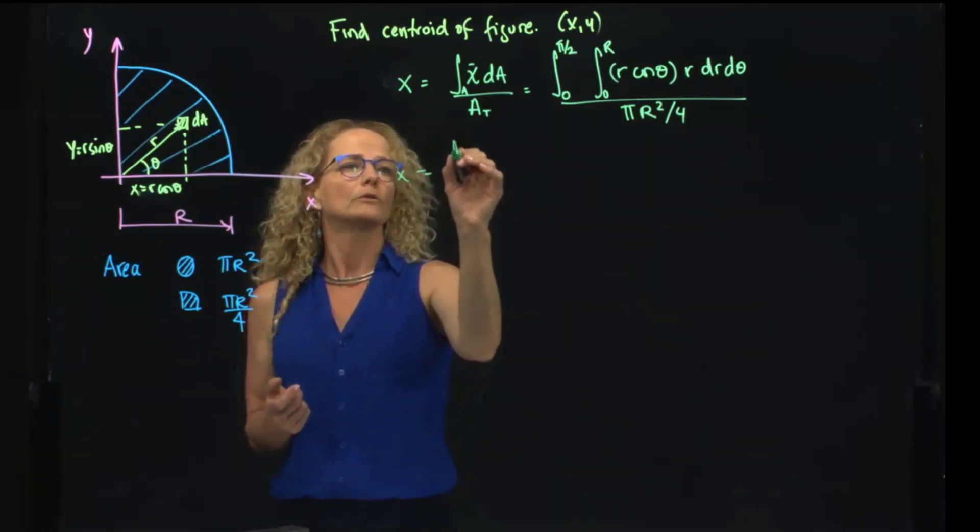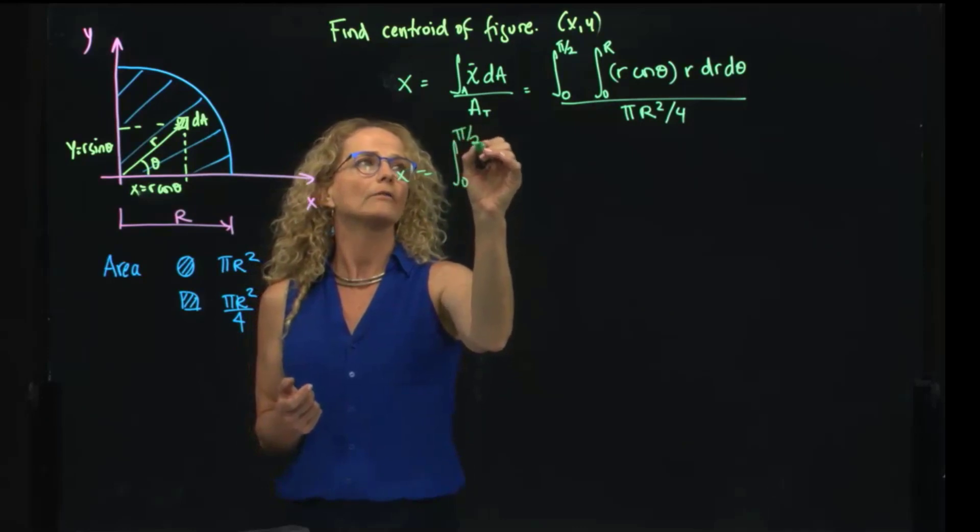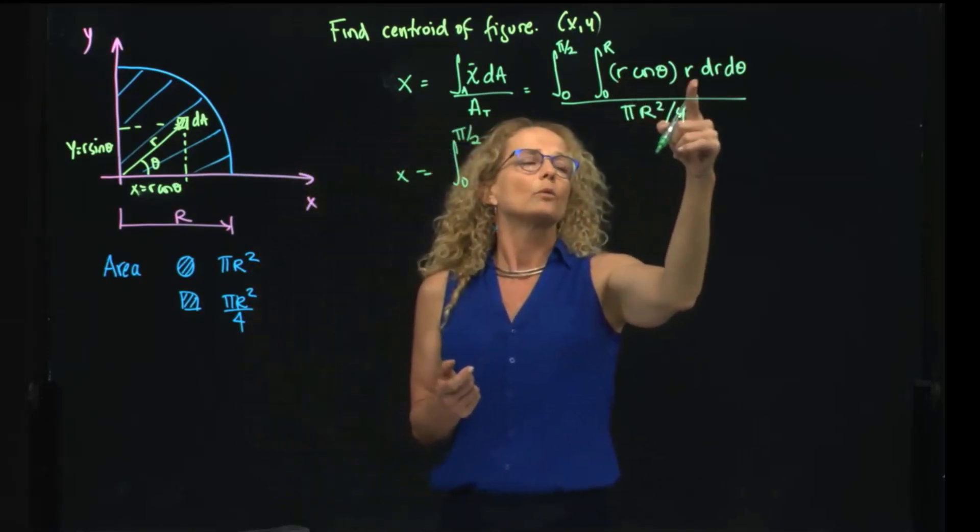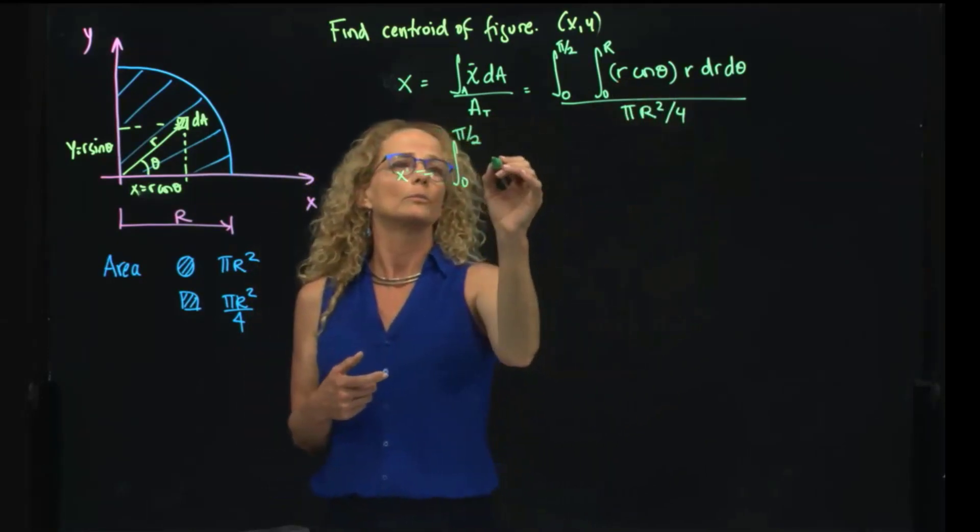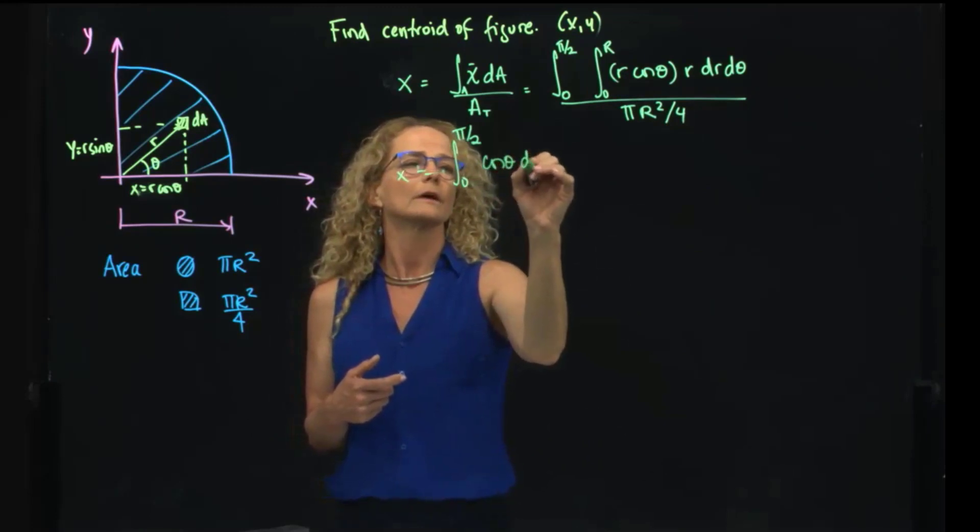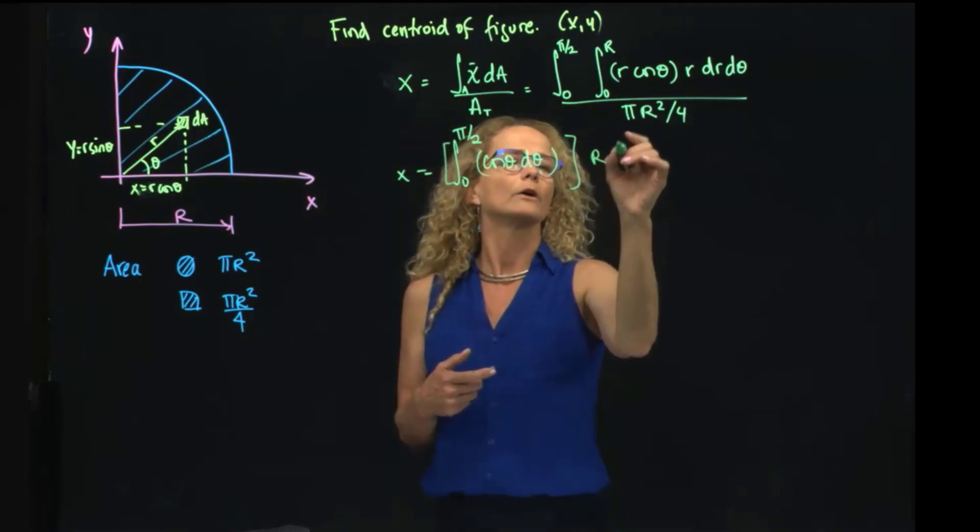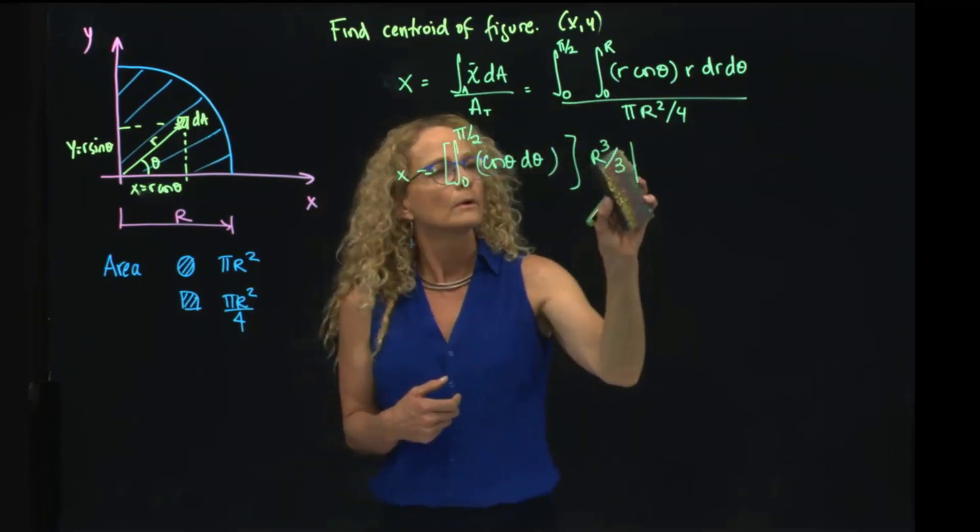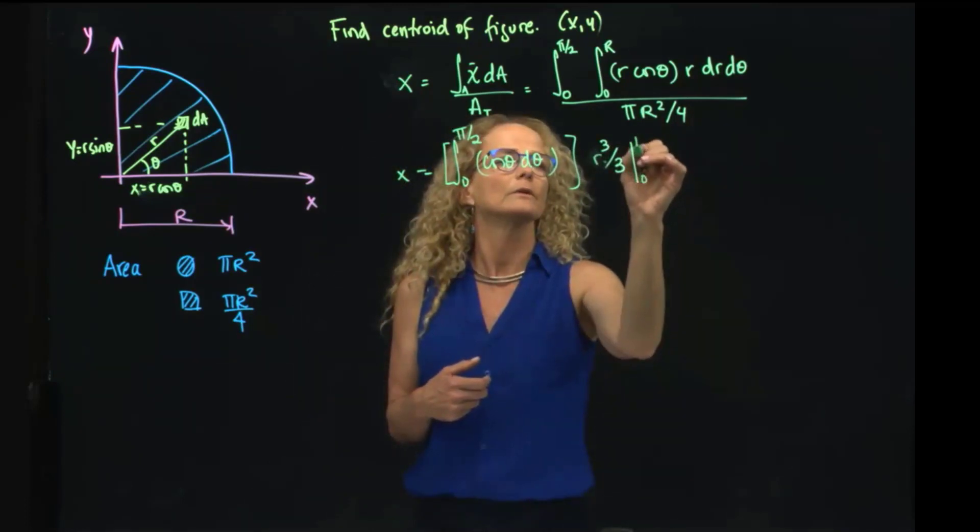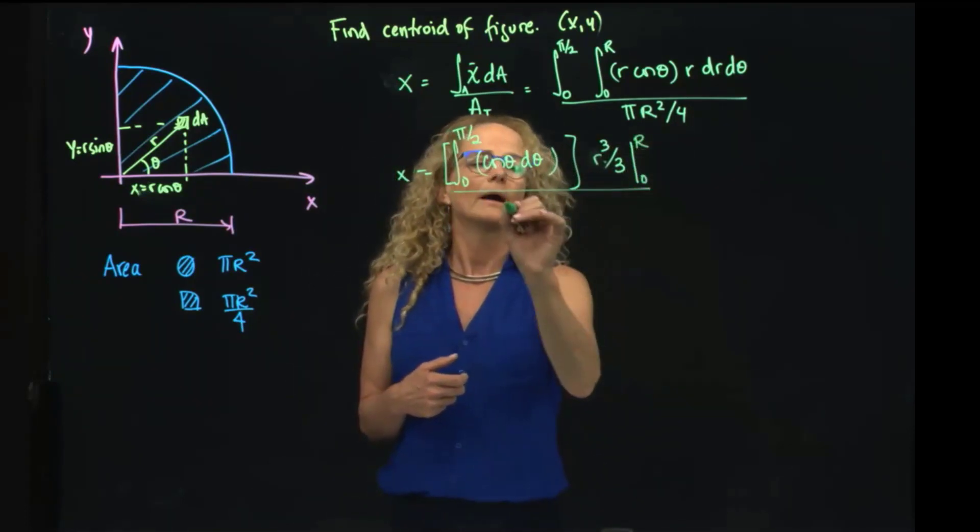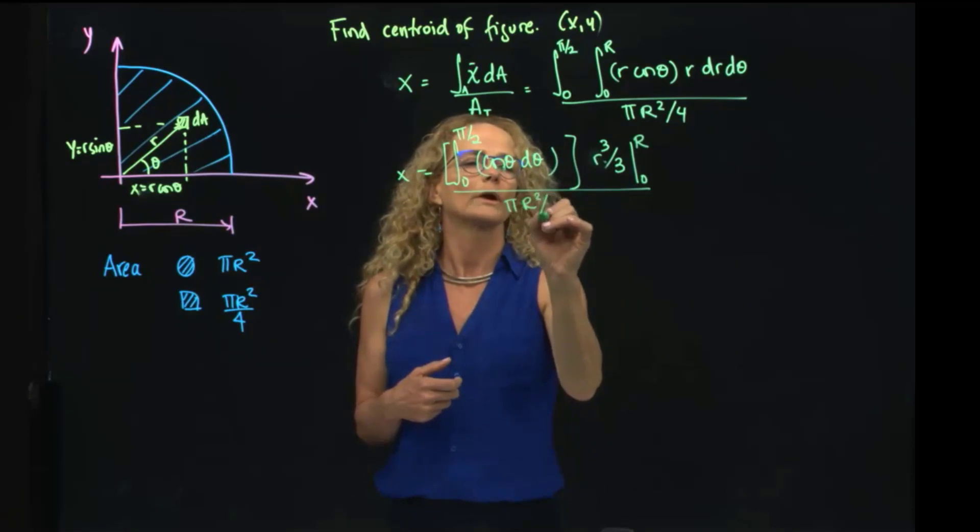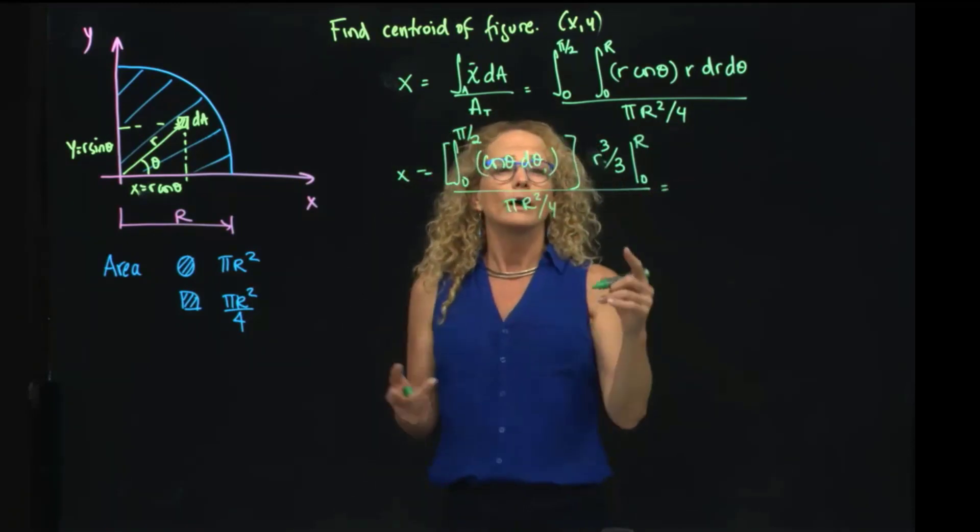That will be equal to 0 to pi half. This is r squared, therefore it's r cubed. I have cosine of theta dtheta, and all that we will multiply by r cubed over 3, evaluated between 0 and r, divided by pi r squared over 4. As you see, this 4 I can place it at the top and this in the bottom, pi.